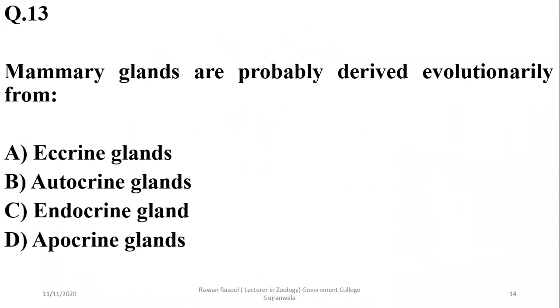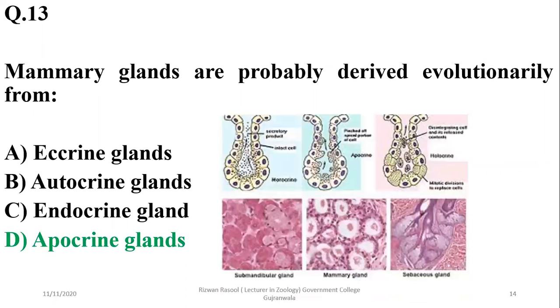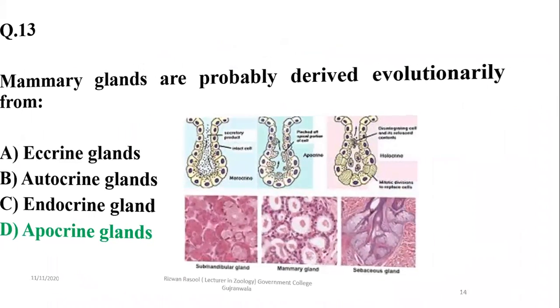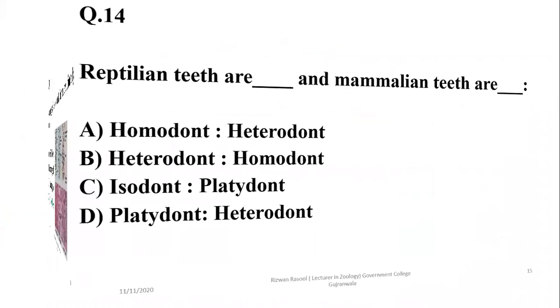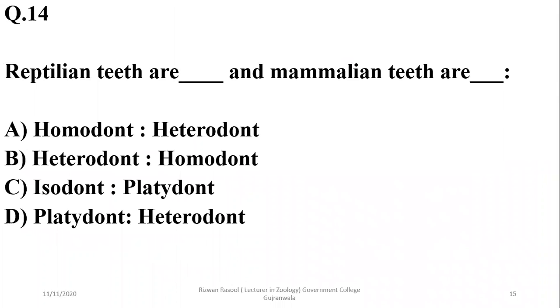Question 13: Mammary glands are probably derived evolutionarily from apocrine glands. The right option is D.